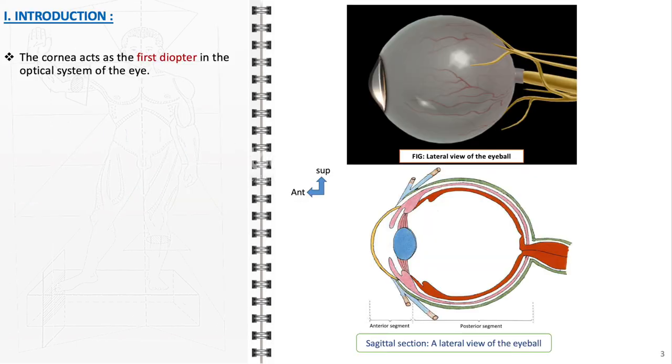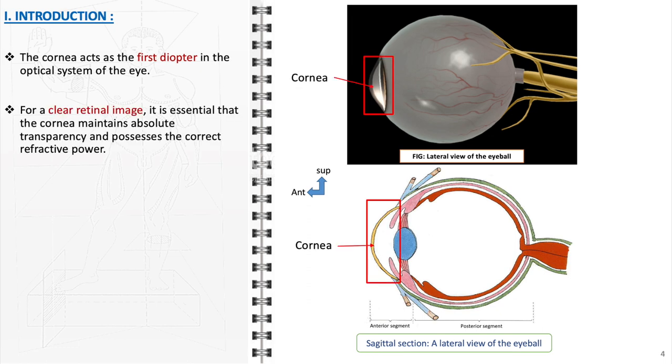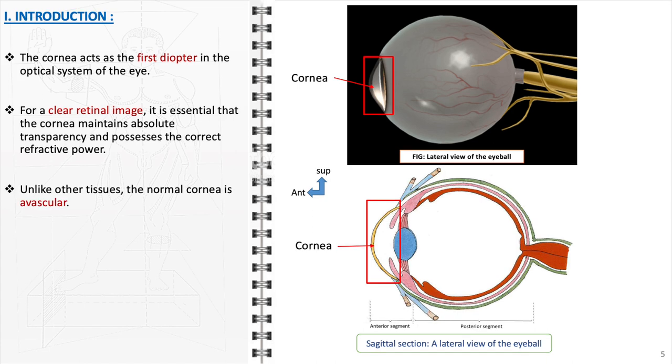The cornea serves as the initial diopter within the eye's optical system, playing a crucial role in focusing light onto the retina. To ensure a sharp and clear retinal image, the cornea must maintain complete transparency and have the appropriate refractive power. Unique among body tissues, the normal cornea is avascular, meaning it does not contain blood vessels. This characteristic is vital for its transparency.